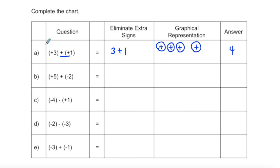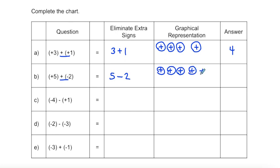Part B: eliminate extra signs — the leading positive isn't needed, so that's just five. A positive and negative beside each other are different signs, replaced with subtraction — so we're subtracting two. Graphically, five positive symbols and two negative symbols: cross out matching sets, and I'm left with one, two, three positive integers — the answer is three.